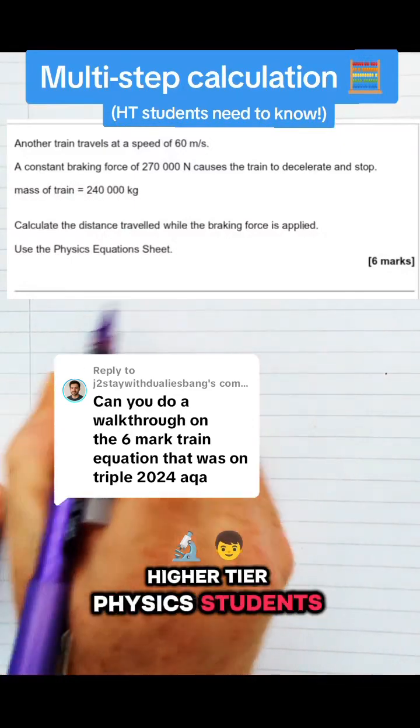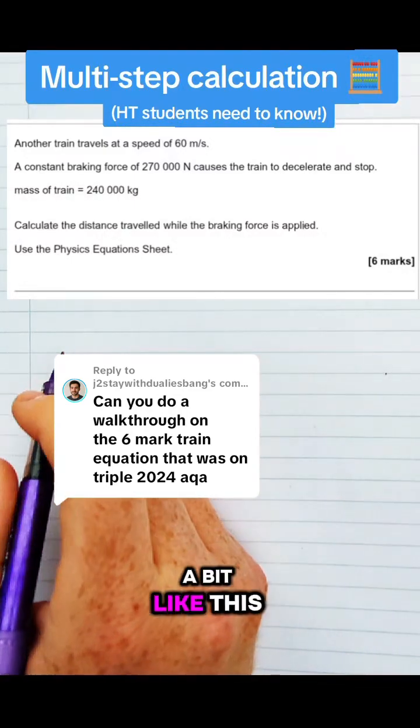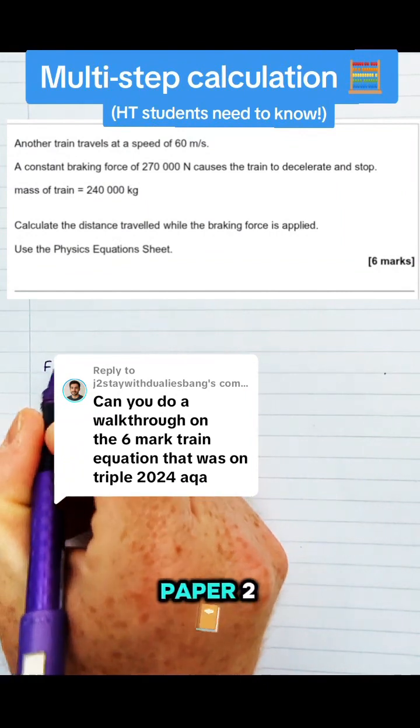Higher tier physics students, you should expect to have a question that looks a bit like this on your GCSE physics paper too.